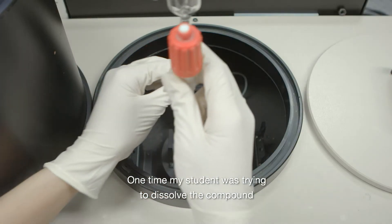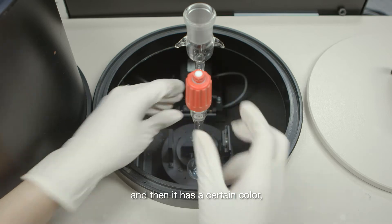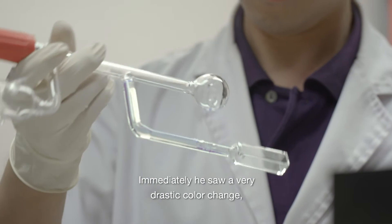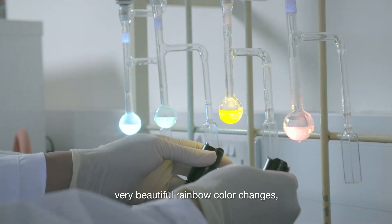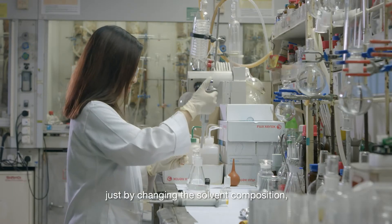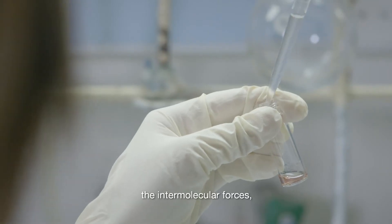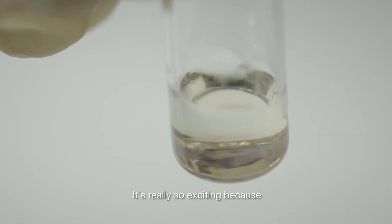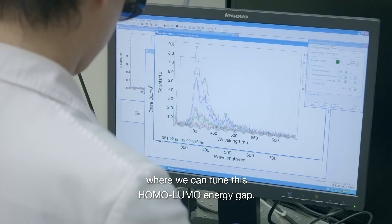One time my student was trying to dissolve the compound and it had a certain color. But then when he added a bad solvent to it, which really reduced the solvation, immediately he saw a very drastic color change. Very beautiful, sort of rainbow color changes, just by changing the solvent composition. This is because we are really trying to manipulate the intermolecular forces, the molecular packing of the individual molecules. It's really so exciting because now we have an additional dimension where we can tune this HOMO-LUMO energy gap.